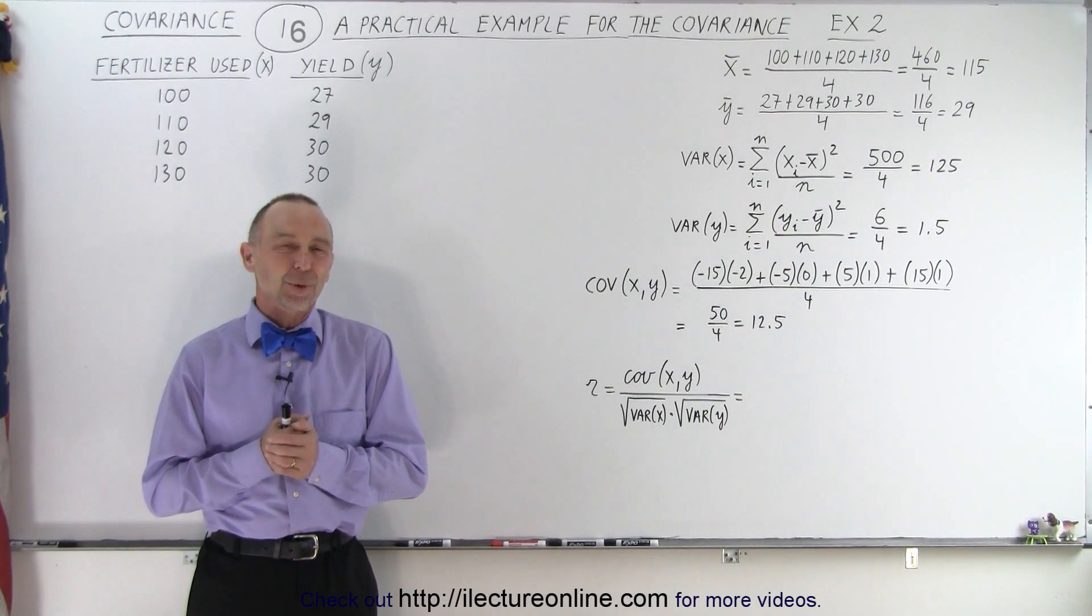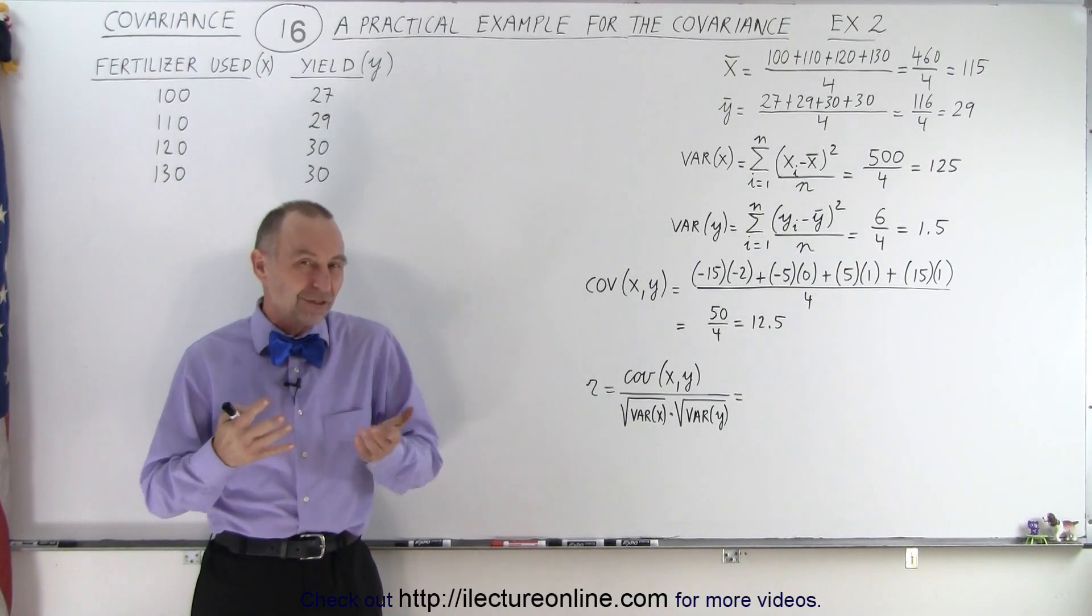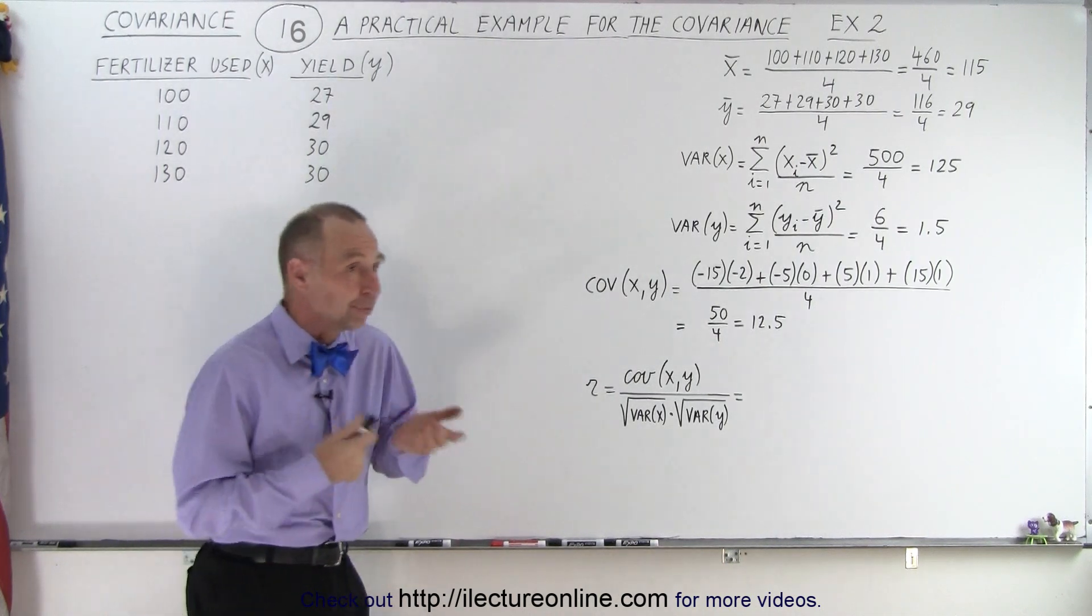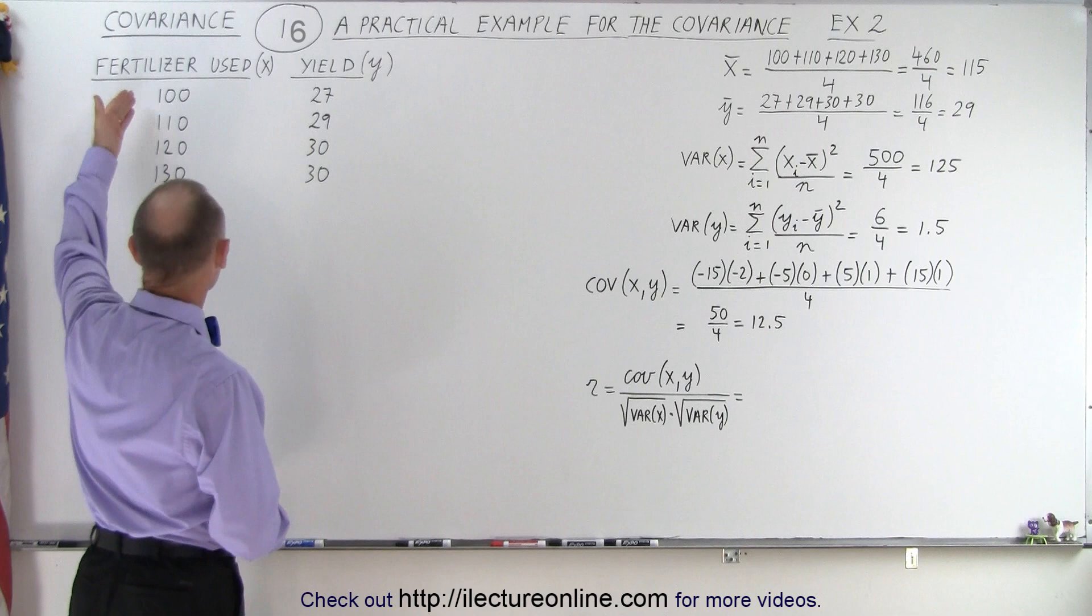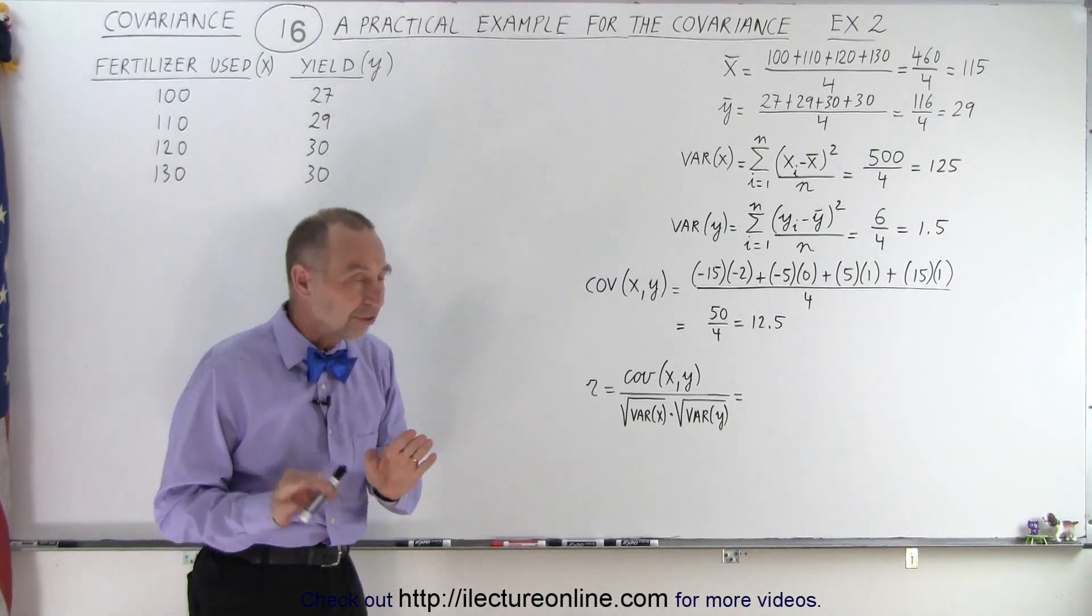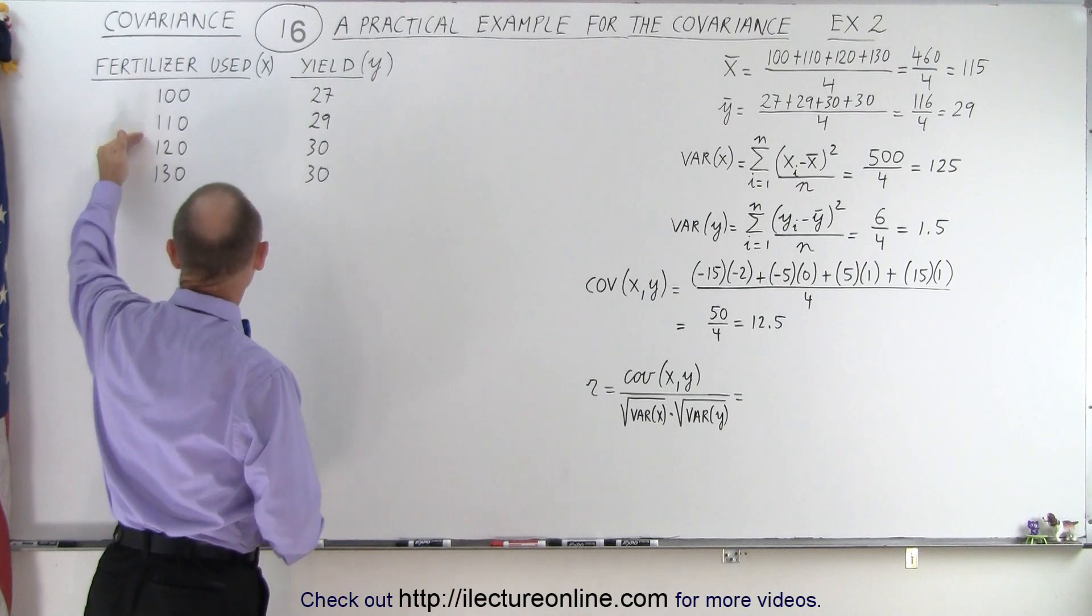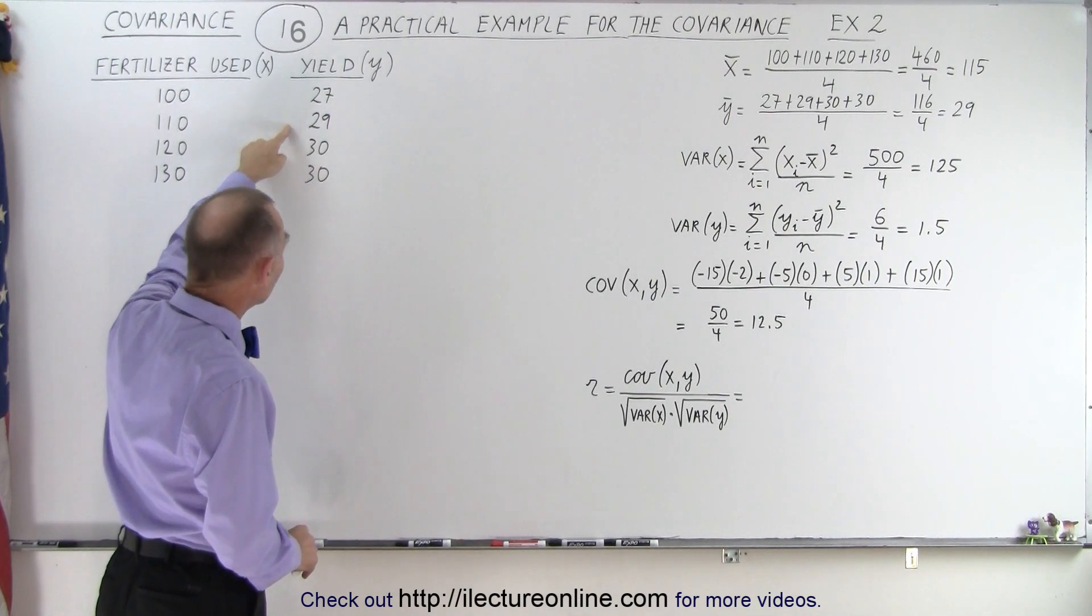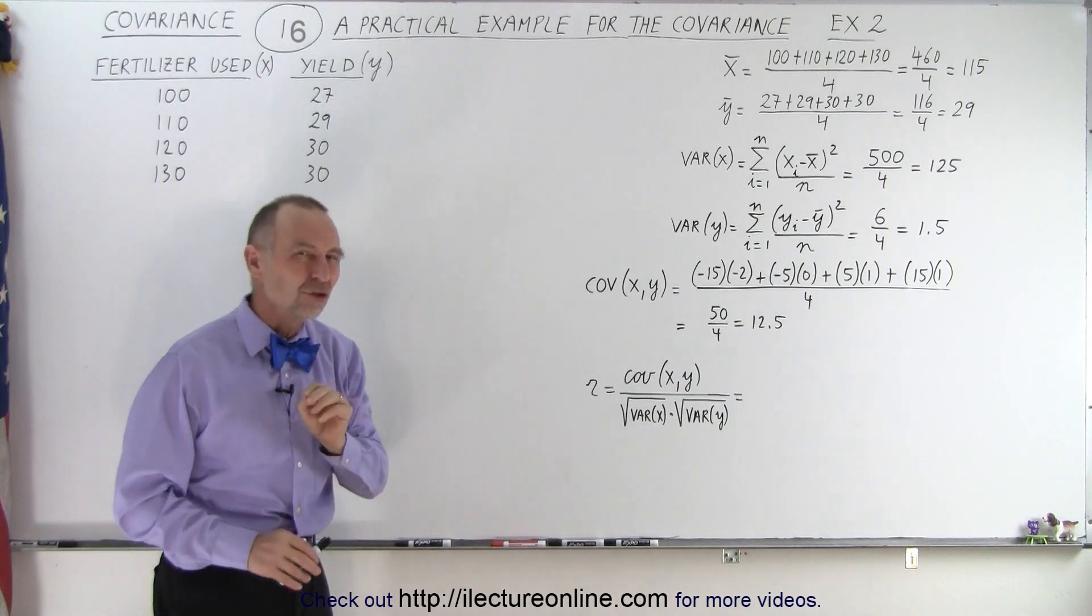Welcome to iLectureOnline. So here's part two of essentially the same example with some numbers changed. We've told the farmer to start using more fertilizer and then to see how the yield changes. You can still see that when the farmer increases the amount of fertilizer used, there's still an increase in yield, but it looks like the increase is beginning to get smaller.